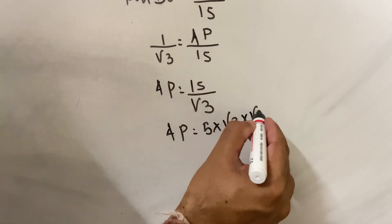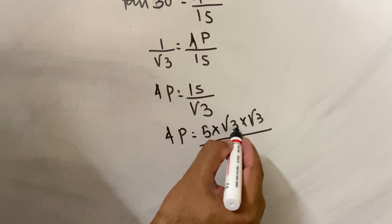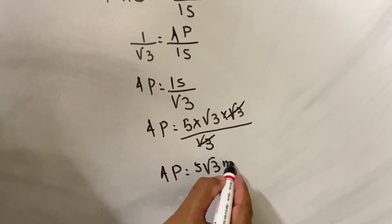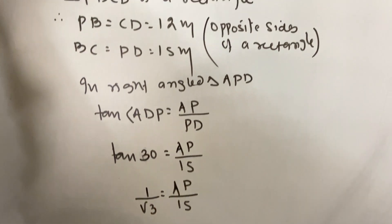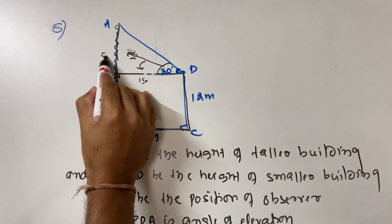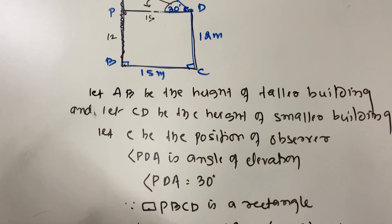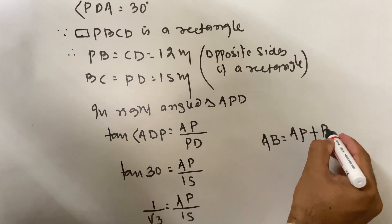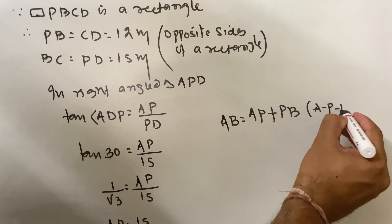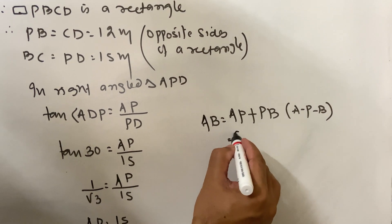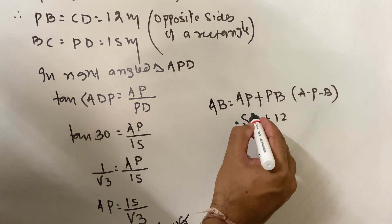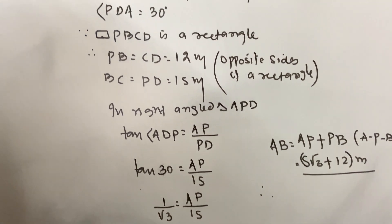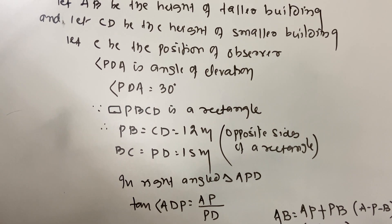AP = 15 upon root 3. Write 15 as 5 into root 3 into root 3 upon root 3. Root 3 cancels, so AP = 5 root 3 meters. Therefore AB = AP + PB = 5 root 3 + 12 meters. Therefore the height of the taller building is 5 root 3 + 12 meters.